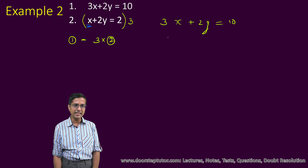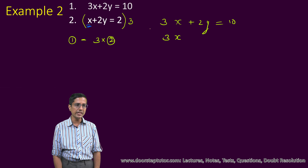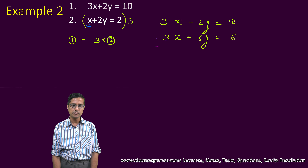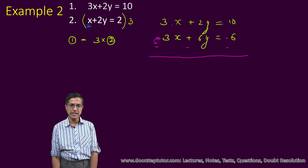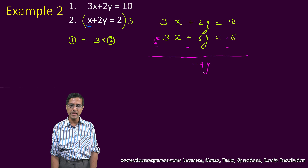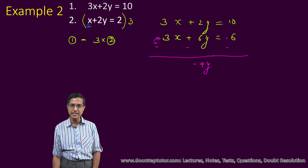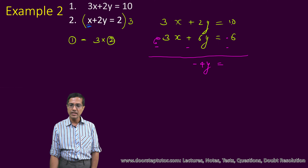So this is 3x. Multiplying 3 by the entire equation means 3 is multiplied by each of its terms, so this becomes plus 3 into 6y, equal to 3 into 6. We use the subtraction sign, so each plus becomes a minus. Then 3x minus 3x becomes 0. And 2y minus 6y becomes minus 4y — keep track of your signs, because 6y is bigger than 2y, so the result is negative. And here 10 minus 6 is equal to 4. So y comes out to be minus 1.